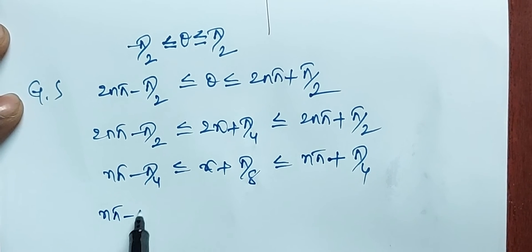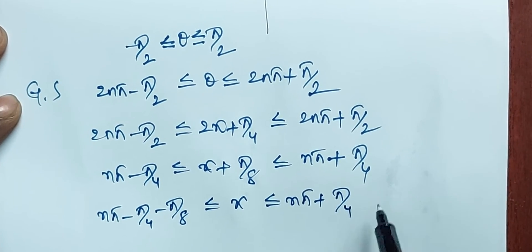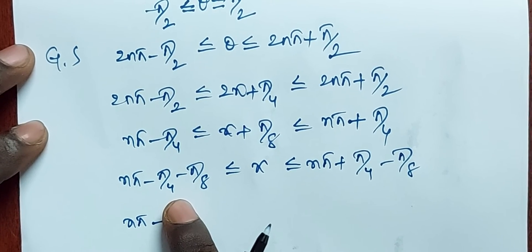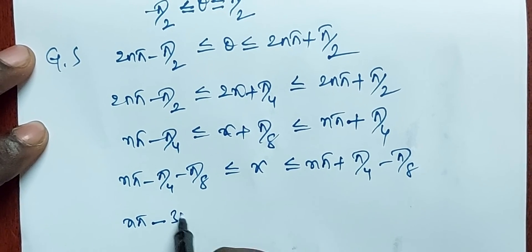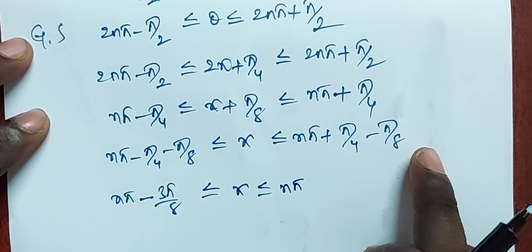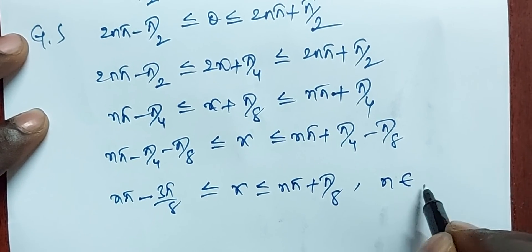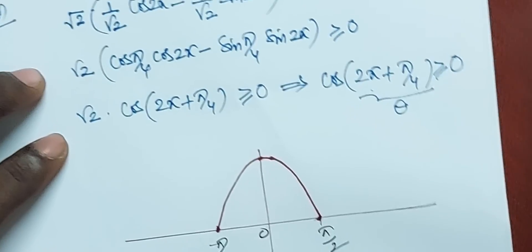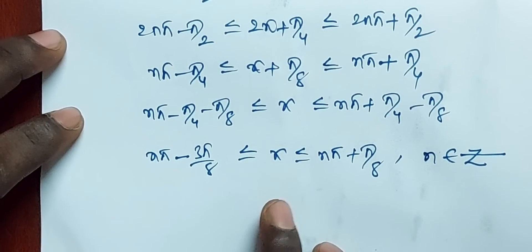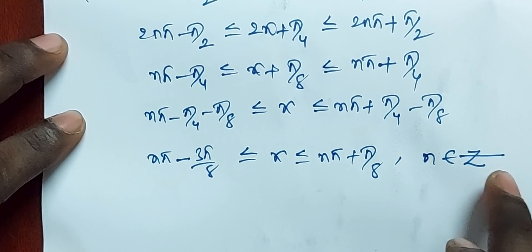We get nπ minus π/4 minus π/8 ≤ x ≤ nπ + π/4 minus π/8, which simplifies to nπ minus 3π/8 ≤ x ≤ nπ + π/8, where n belongs to ℤ. So cos2x minus sin2x ≥ 0 only when x lies in [nπ minus 3π/8, nπ + π/8], where n belongs to ℤ.